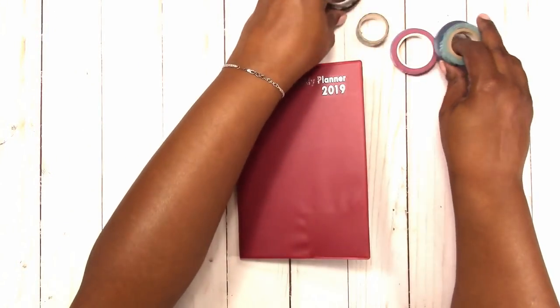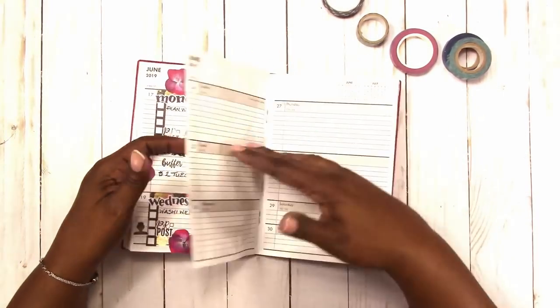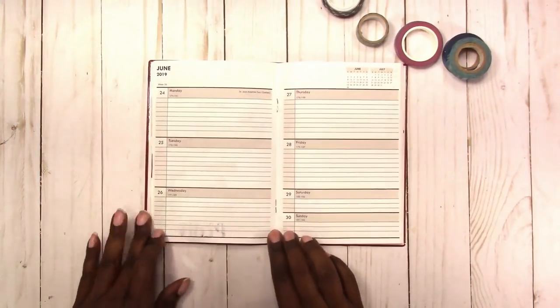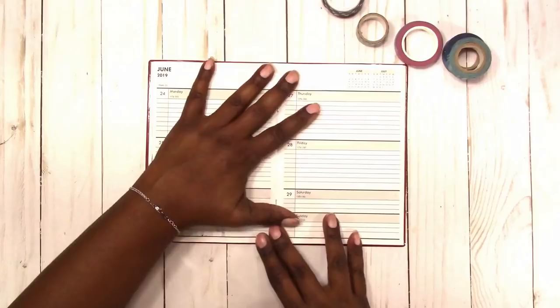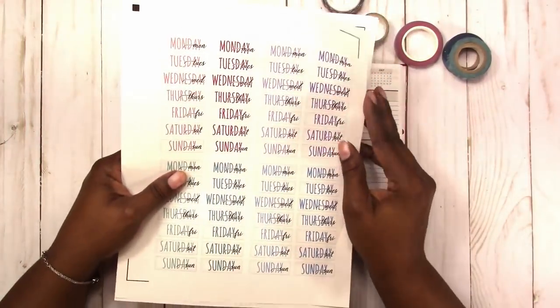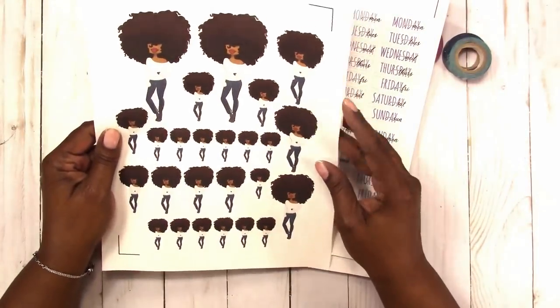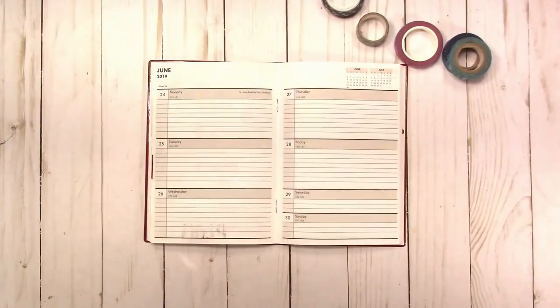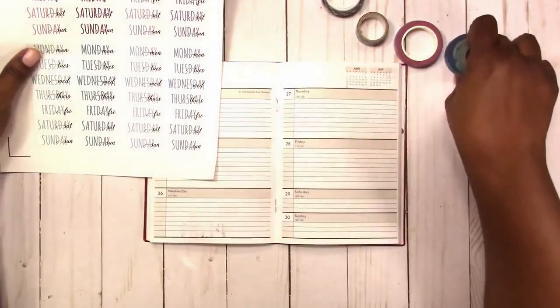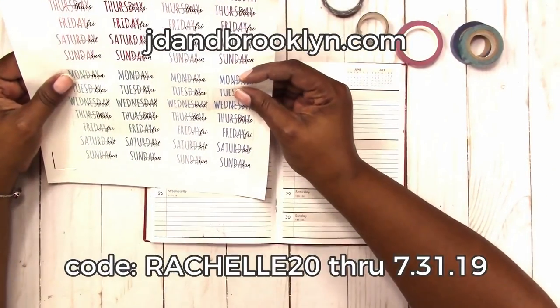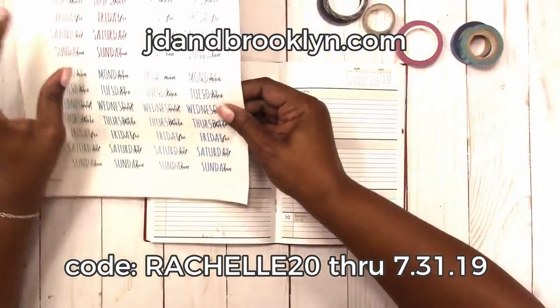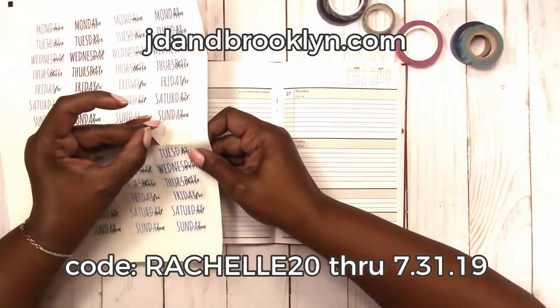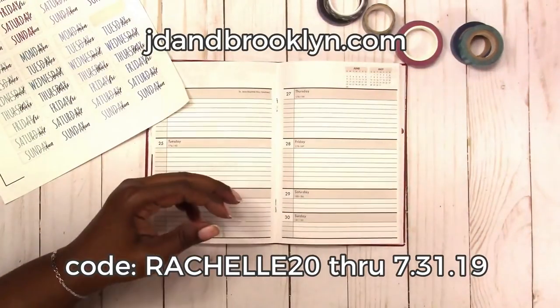This is the washi tape that I'll be using for the week of June 24th through June 30th. I had a little bleed through from the previous week but we're going to work over that. These are digital downloads. The date covers are freebies available on my website at Squabcrafttastic.com and the dolls are digital downloads available from JD and Brooklyn. You can use my code Rochelle20 to save 20%.